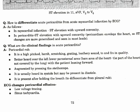Clinical findings in acute pericarditis include the pericardial rub. It is a high-pitched, harsh, stretching, grating, leathery sound — to-and-fro in quality. Better heard over the left lower parasternal area, the bare area of the heart — the part not covered by the lung — with the patient leaning forward, augmented by pressing the stethoscope.